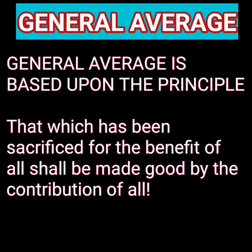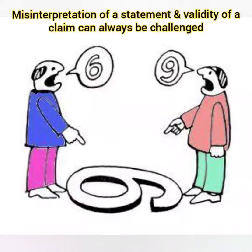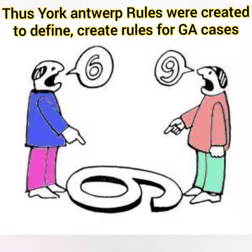So finally, general average is based upon the principle that which has been sacrificed for the benefit of all shall be made good by the contribution of all. But every definition has a gray area — how do we actually know what sacrifices and expenditure qualify to be averaged and shared by other parties? To solve this issue we have York Antwerp Rules, which sets the guidelines of which sacrifices and expenditures can be included during the general average and which cannot.